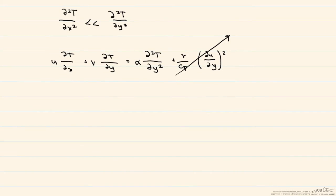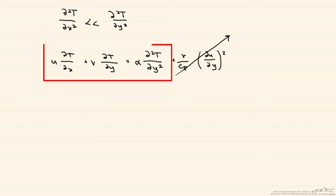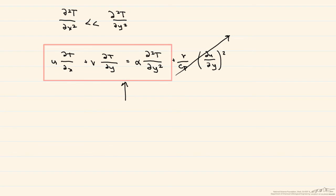So now we're left with a simplified differential equation. We'll look at the simplest case: laminar flow over a parallel plate. We'll non-dimensionalize the variables and put these equations in a form that will result in the governing dimensionless variable for convective heat transfer. The variables we need to non-dimensionalize are: u, v, x, y, and T.